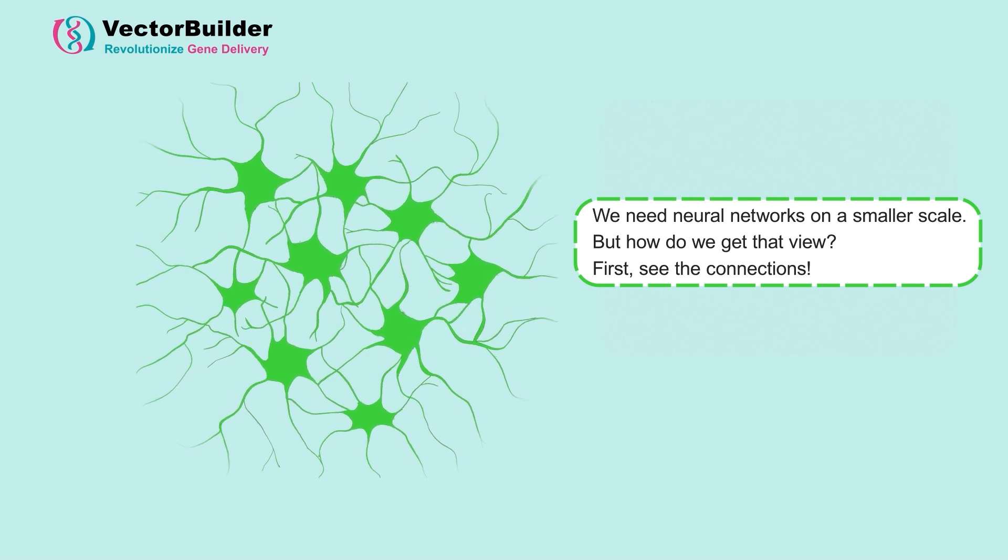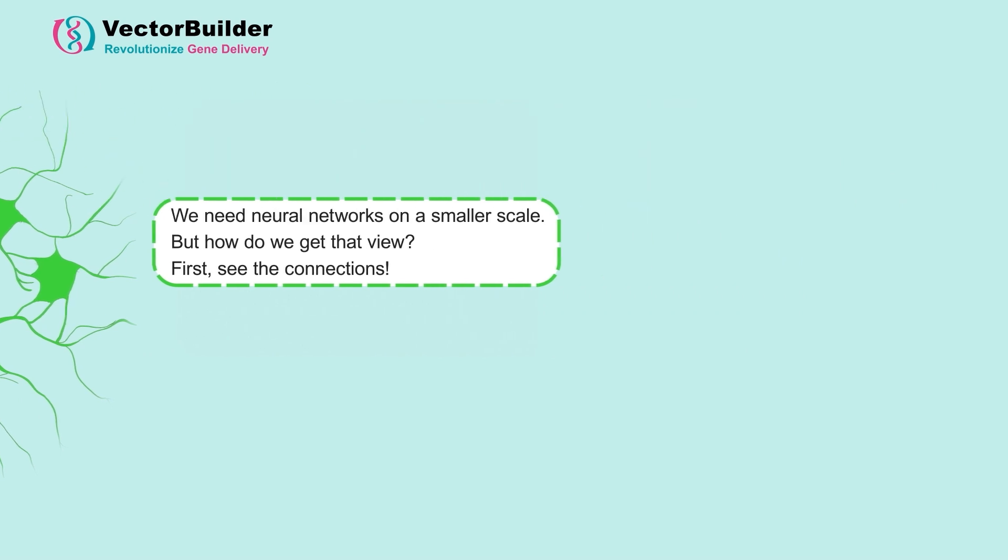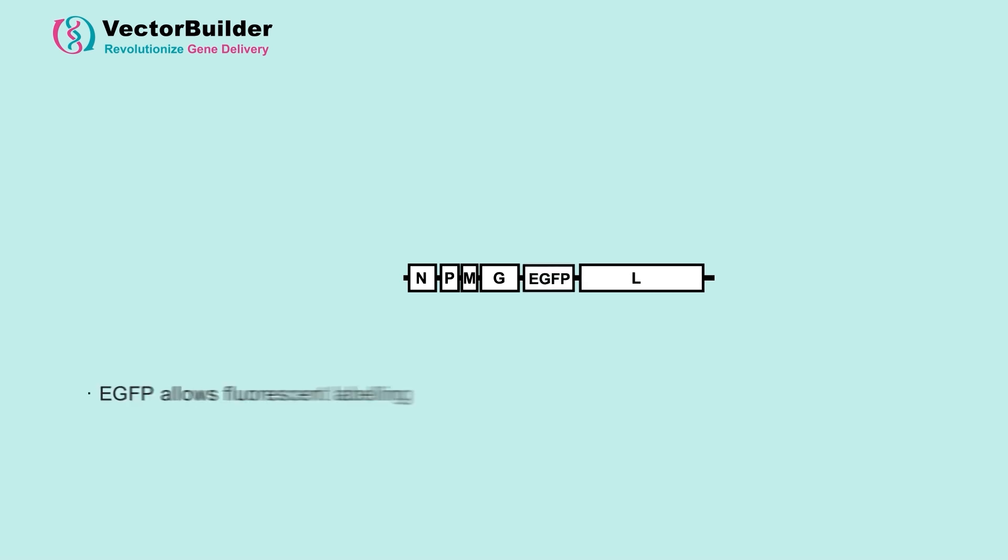First things first, we have to make sure we can actually see the connections in the brain. The wide world of recombinant viruses makes this pretty straightforward. We are able to take the viral genome and insert our own sequence, for instance, a marker like EGFP.